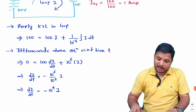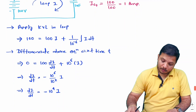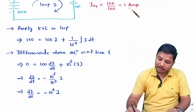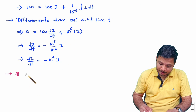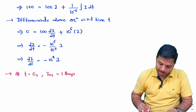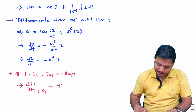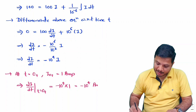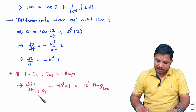Our agenda is to find di/dt at time t equals 0 plus. We already have i(0+) equals 1 ampere. Substituting that value: di/dt at t equals 0 plus equals minus 10⁴ times 1, which is minus 10⁴ amperes per second. That is how we find di/dt initially.